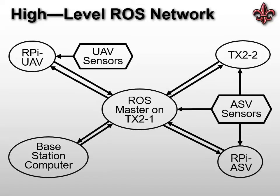This diagram shows how the system is configured. One of the TX2s on the ASV is our ROS master, and all of the other computers are running different ROS software packages for navigation, mapping, and control of these systems. Specifically in our system, ROS is used to collect, publish, and fuse the data needed for simultaneous localization and mapping purposes.